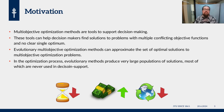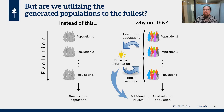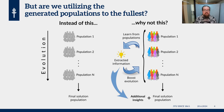In evolutionary multi-objective optimization methods we often end up generating a lot of solution candidates in different populations which we don't really end up using for much. But are we really utilizing these solutions to their fullest potential? I think we are not and I think we could do better. We could learn additional information to not just boost the evolutionary process itself, but also provide a decision maker with additional insights about the solutions and the problem being solved.